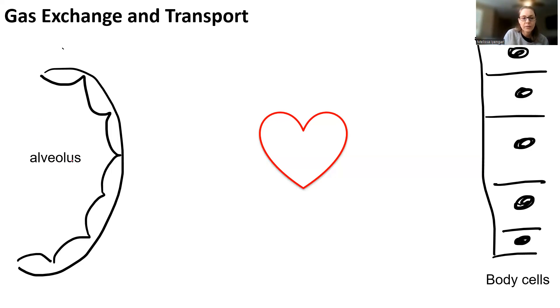So on one side, we have our alveolus. Remember, when we have our alveolus, air is going to come in to the alveolus, and air goes out of the alveolus.